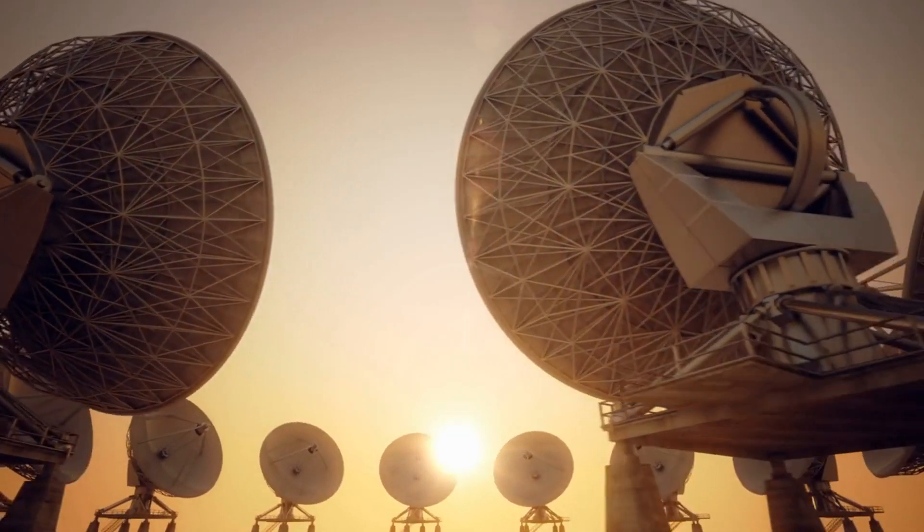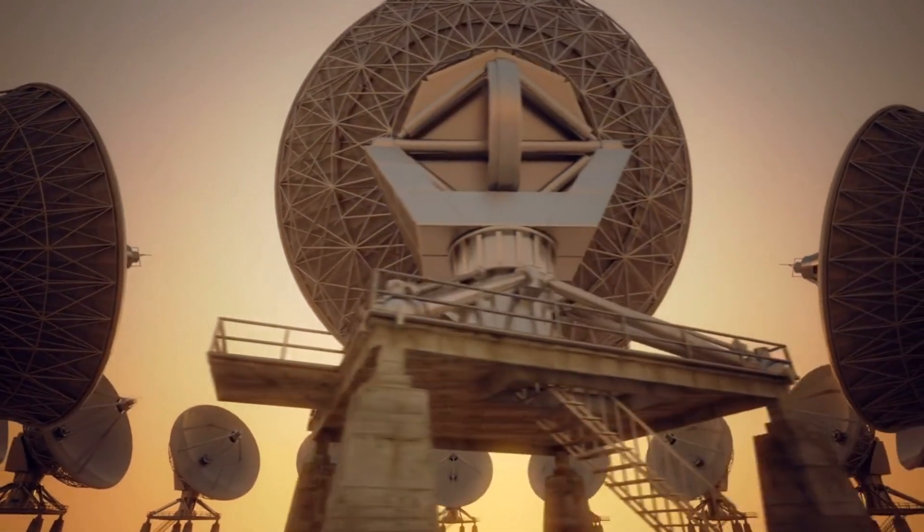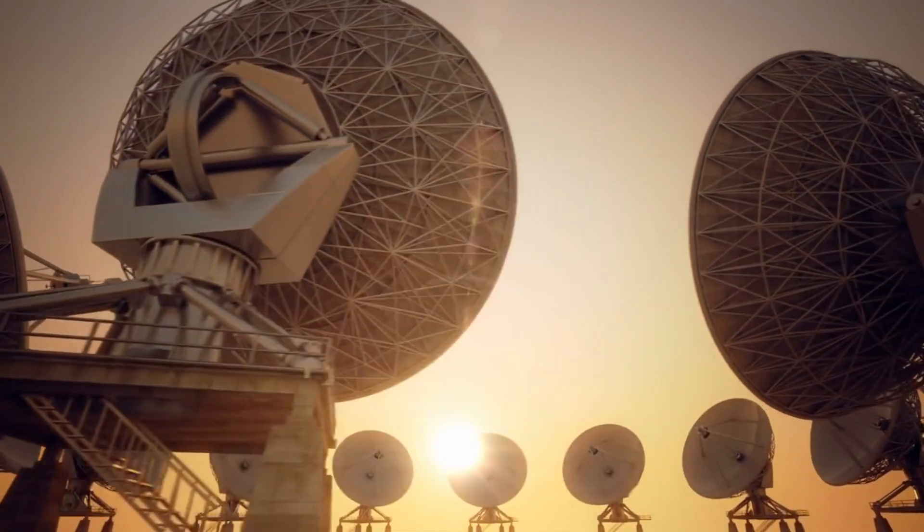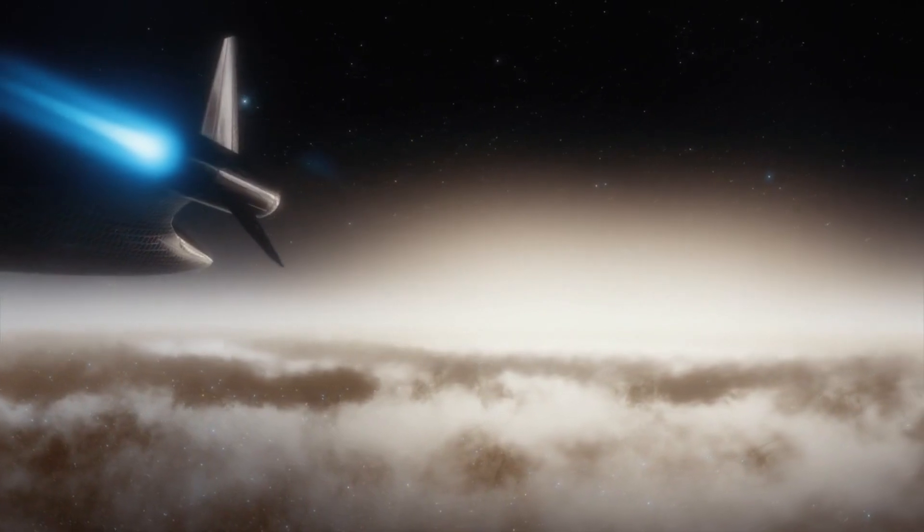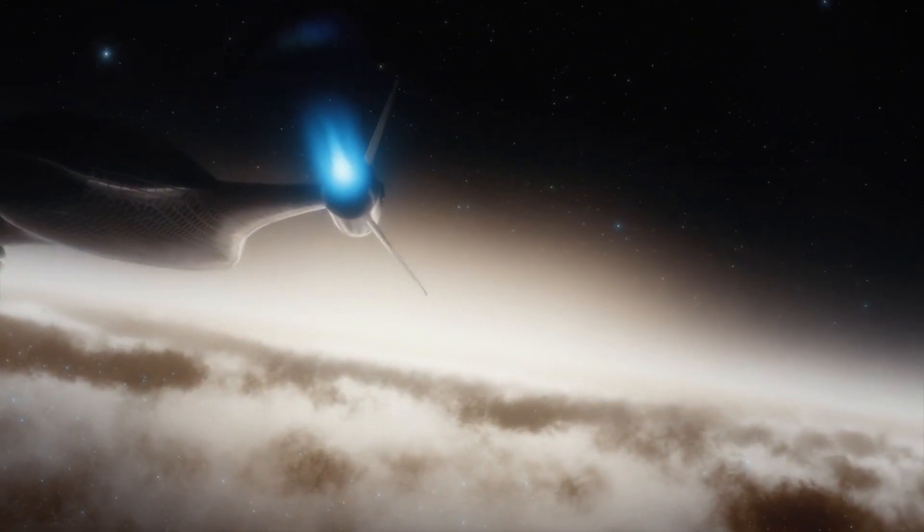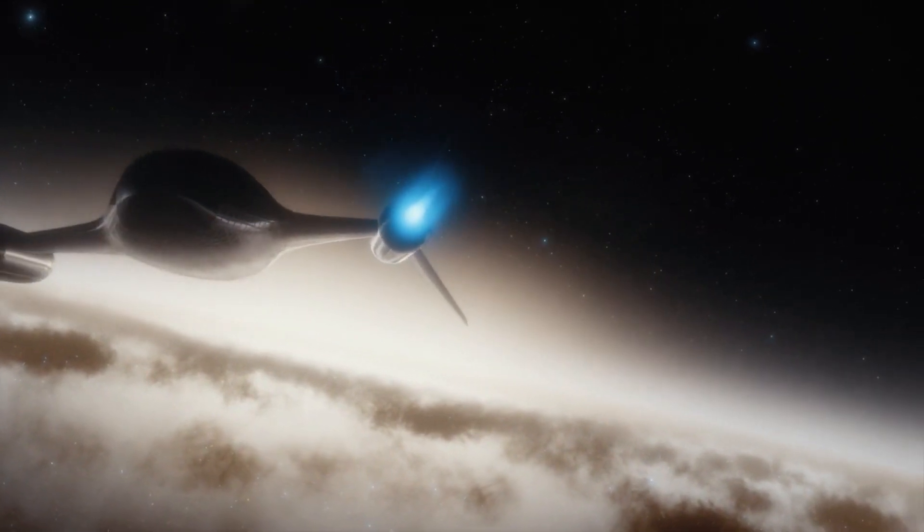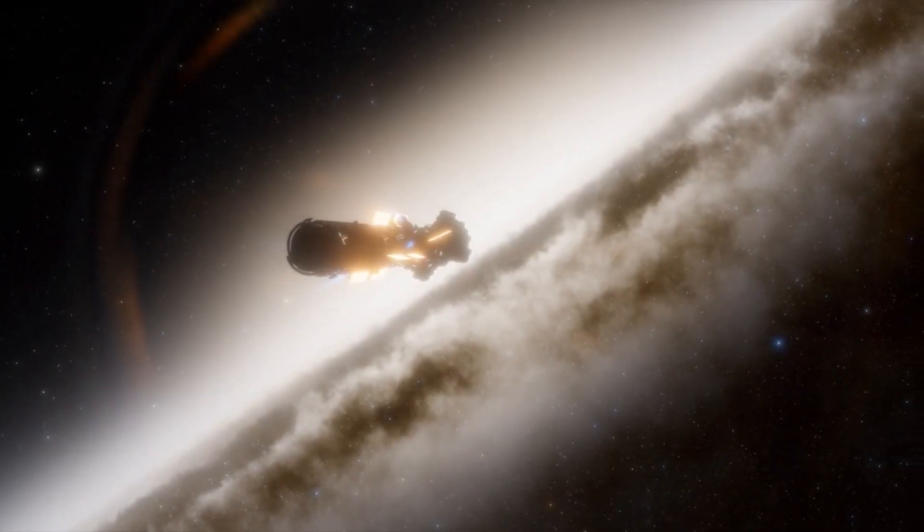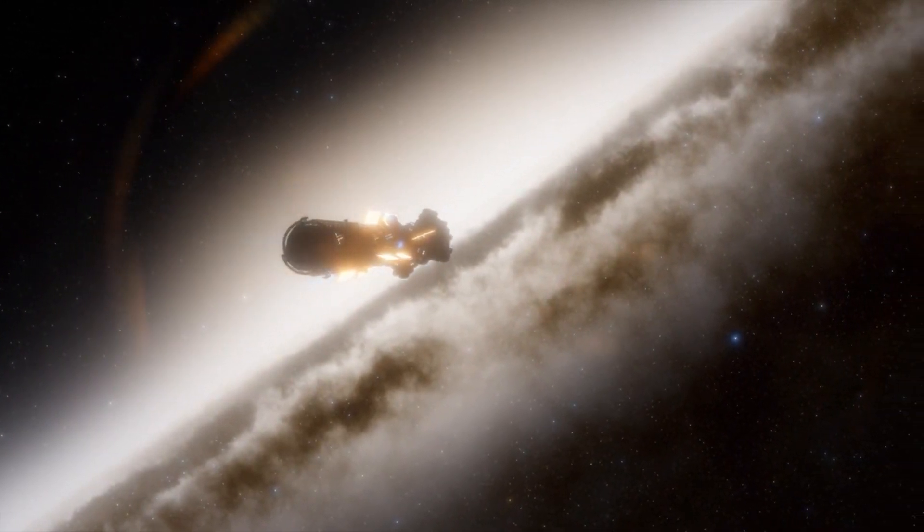The Sun's orbit around the galactic center is not a perfect circle but rather an elliptical path. It takes the Sun approximately 225 to 250 million years to complete one orbit around the galactic center. This vast timescale is known as a galactic year or cosmic year.